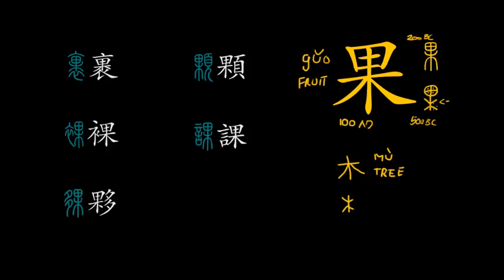You could say this character is a semantic compound — a meaning-meaning compound — where two separate characters are joined to create a new character and both elements have a semantic value, with none having a phonetic value. However, the top of the oracle bone script character does not exist in the regular script, at least to my knowledge.